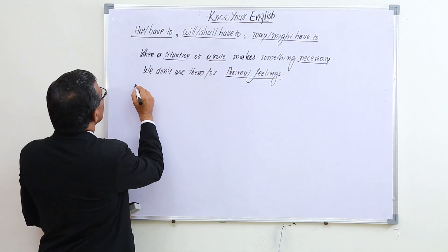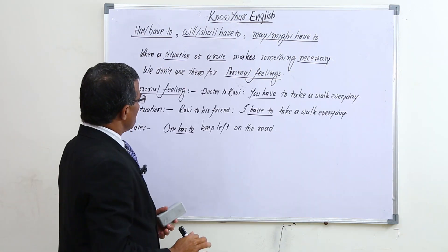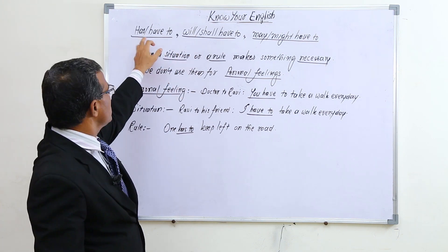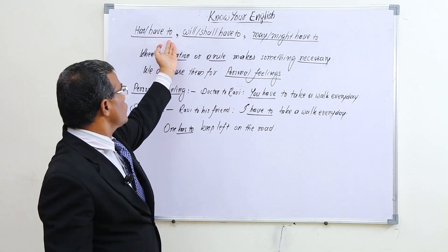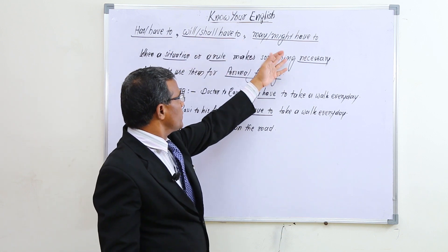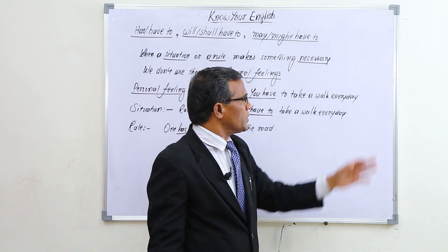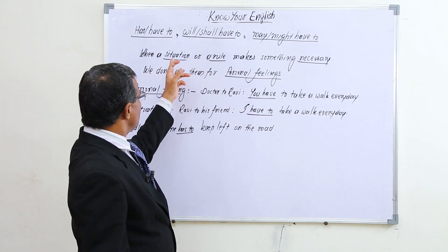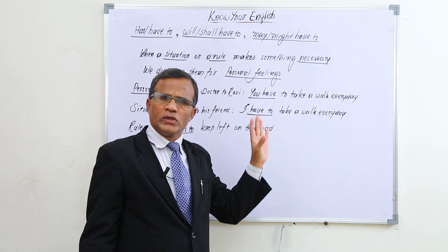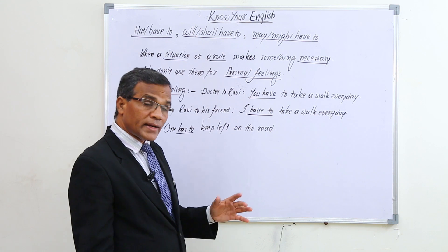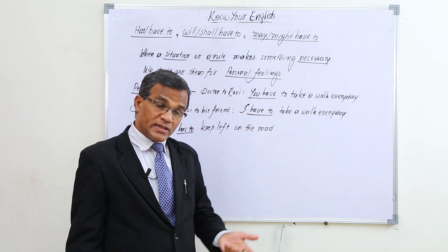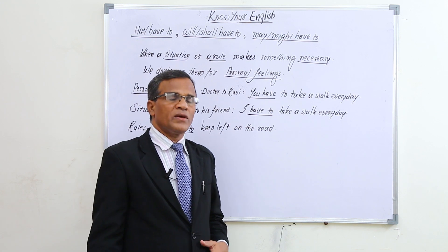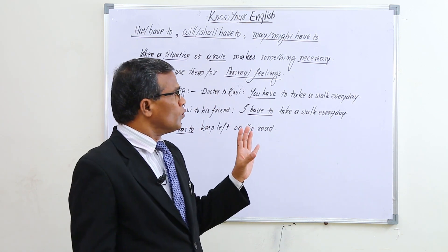Let me explain with examples. If the subject is singular, use 'has'; plural or 'I' uses 'have.' The structures are: subject plus has/have to plus V1; will/shall have to plus V1; and may/might have to plus V1. These are used when a situation or rule makes something necessary — not for personal feelings.